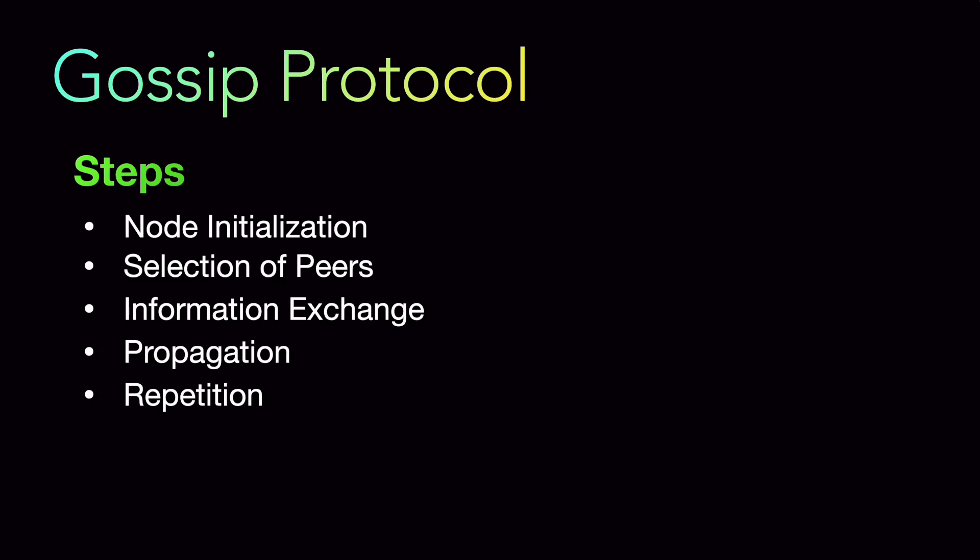So to summarize the steps for gossip protocol: you initialize the node, the node then selects peers, and exchanges information both ways — both nodes share information between them. Propagation means the nodes incorporate the received information and then select new random nodes. It continuously repeats the process until full coverage is achieved — all peers in the entire network have the updated information.